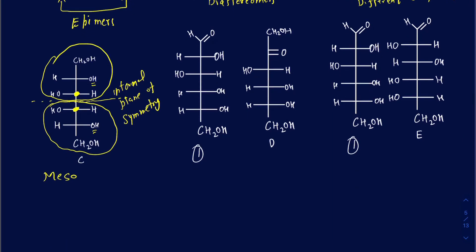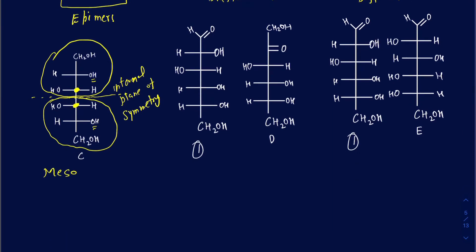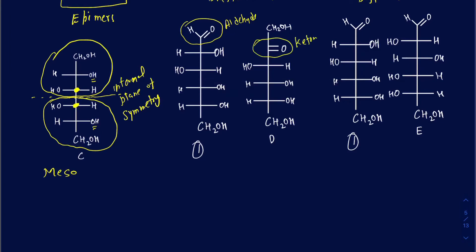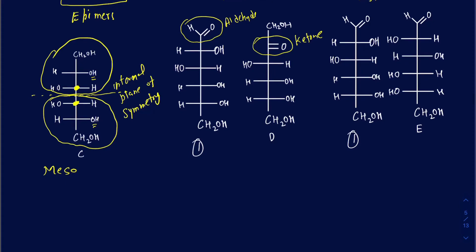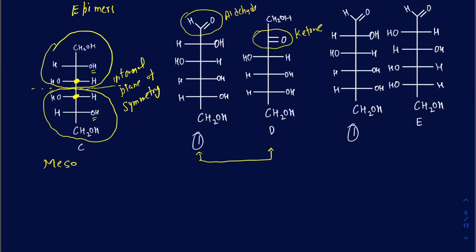In structures 1 and D, there is a different functional group. Structure 1 has an aldehyde functional group — that's glucose — while structure D has a ketone functional group — that's fructose. They both actually have the same molecular formula, but their connectivity is different because one has a ketone and the other has an aldehyde. If their connectivity is different, they are constitutional isomers, also called functional group isomers. The bottom line is they are not stereoisomers because their connectivity is different.